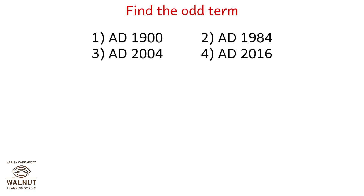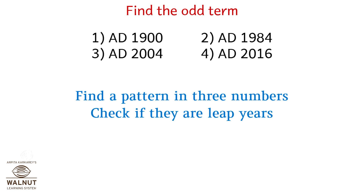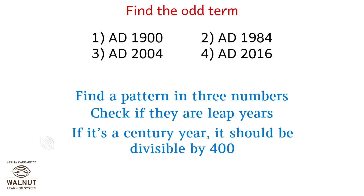Find the odd term. Find a pattern in the numbers — check if they are leap years. If it's a century year, it should be divisible by 400. Which one isn't? It's AD 1900, option 1.